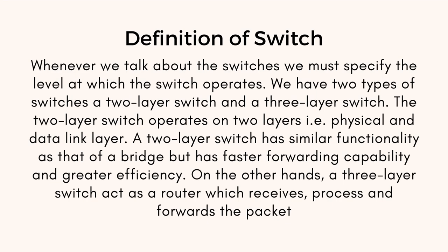Definition of switch. Whenever we talk about switches, we must specify the level at which the switch operates. We have two types of switches: a two-layer switch and a three-layer switch. The two-layer switch operates on two layers — physical and data link layer — and has similar functionality as a bridge but with faster forwarding capability and greater efficiency. On the other hand, a three-layer switch acts as a router, which receives, crosses, and forwards the packet.